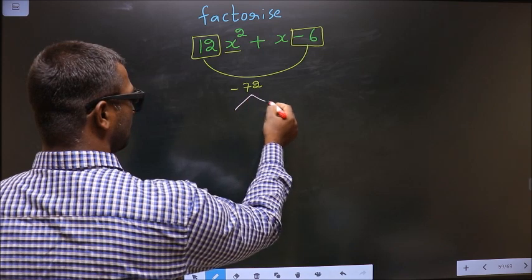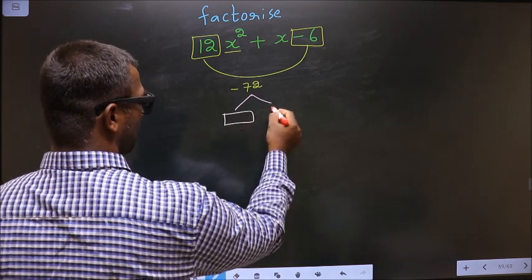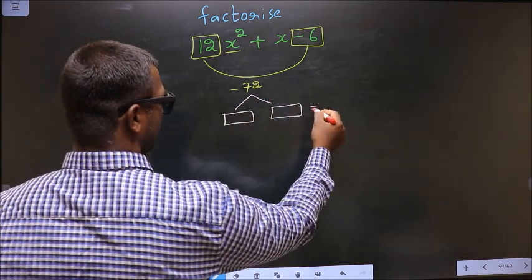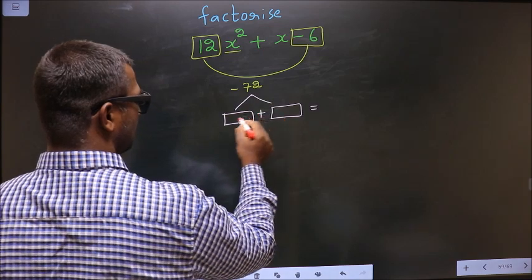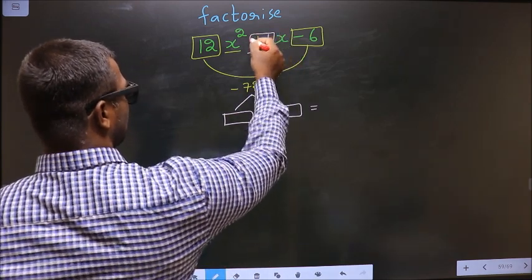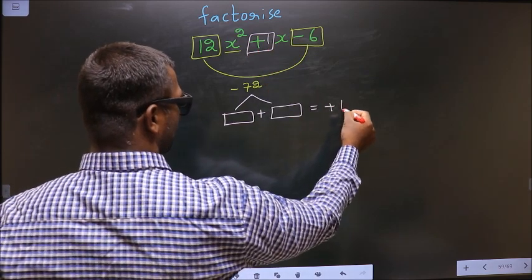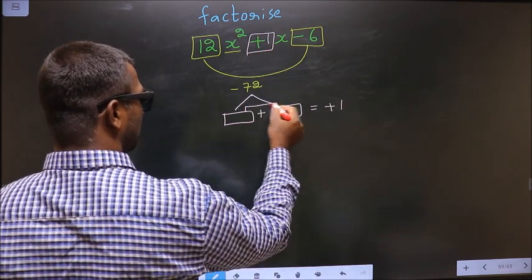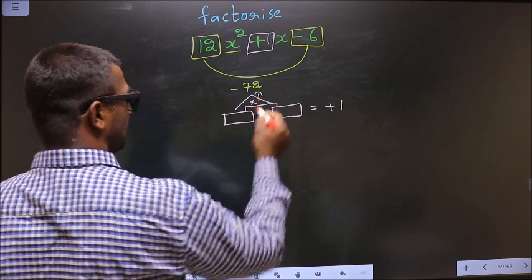Now you look for two numbers such that when you add them you get the middle coefficient, which is +1, and when you multiply them you get -72.